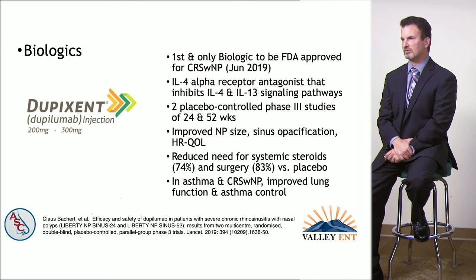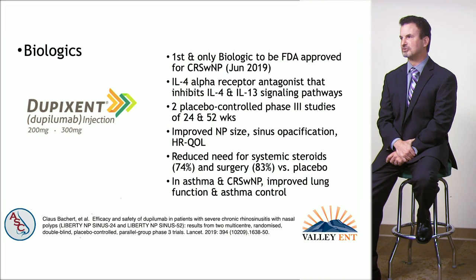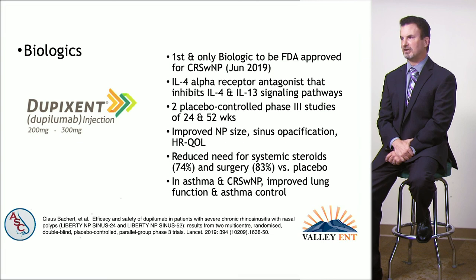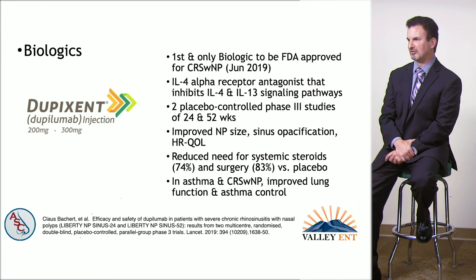Dupixent deserves special attention as the first and only biologic FDA-approved for patients with polyps, approved in June 2019. It is an IL-4 alpha receptor antagonist, working on both IL-4 and IL-13. Its effectiveness and safety were demonstrated in two placebo-controlled Phase 3 studies with effects lasting up to 52 weeks. It improved polyp size, opacification on CT imaging, and health-related quality of life, while also reducing the need for systemic steroids by 74% and surgery by 83%.